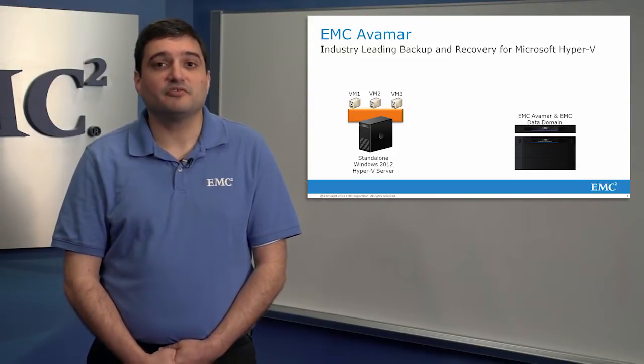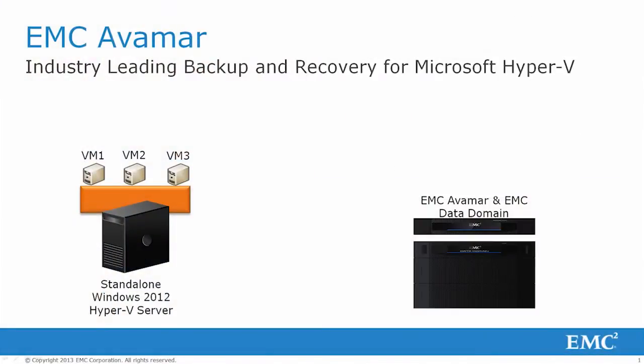For smaller scale deployments, you may have implemented a Hyper-V standalone server for hosting a group of virtual machines. In this scenario, deploying Avamar is as easy as simply installing the Avamar client for Windows and the Avamar plugin for Hyper-V VSS on the Hyper-V management OS, which is often called the parent partition. The Avamar client and Hyper-V plugin are fully integrated with Hyper-V's native VSS technology for efficient and non-disruptive backups of your VHDs.